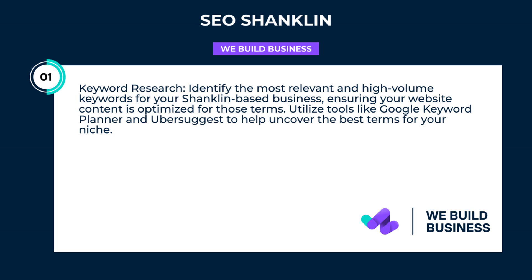Keyword research. Identify the most relevant and high-volume keywords for your Shanklin-based business, ensuring your website content is optimized for those terms. Utilize tools like Google Keyword Planner and Ubersuggest to help uncover the best terms for your niche.